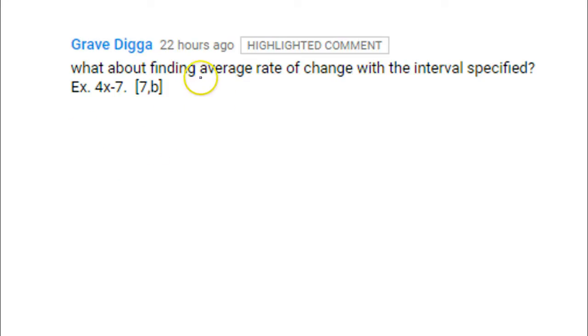So remember that average rate of change is a slope. So that's what we're really finding is a slope. And we know that slope is change in y over change in x. So y2 minus y1 over x2 minus x1.